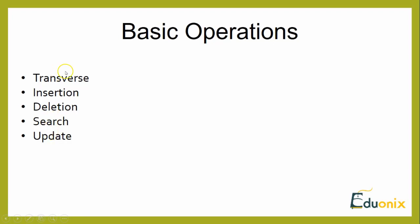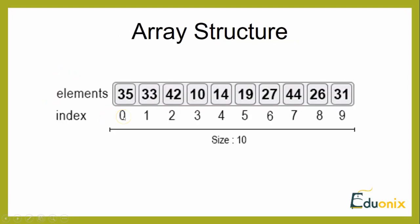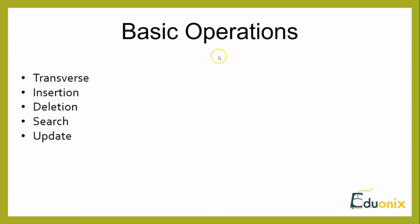Traversal means printing all array elements one by one. Using the previous slide example, starting from index 0, it will print: 35, 33, 42, 10, 14, 19, 27, 44, 26, and 31. So traversal is printing all array elements sequentially from the 0th to the last element.